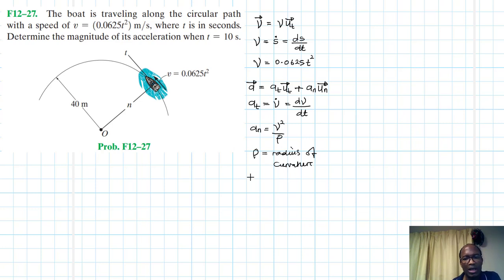So these are the equations that we are going to use to determine the magnitude of our acceleration. And the magnitude itself is going to be equal to, just using Pythagoras theorem, at squared plus an squared. So we have everything that we need. Let's just plug them in.